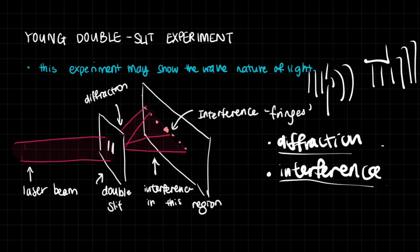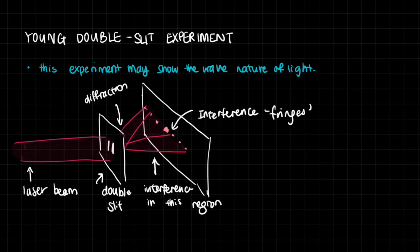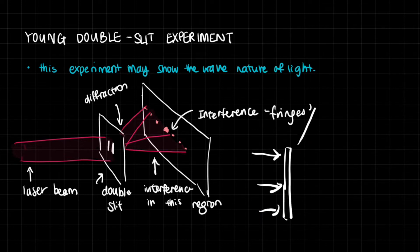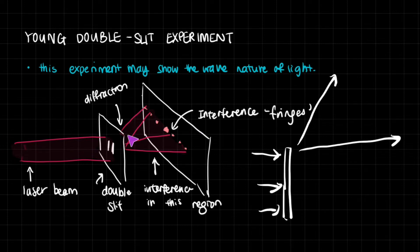What essentially happened was we took a laser beam — some sort of light — and then passed it through a cardboard with double slits in it. As the light passed through each individual slit, it would spread out into the space beyond it. So that happened for both slits, giving us two diffracting sources of light coming out beyond the cardboard.